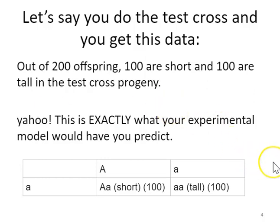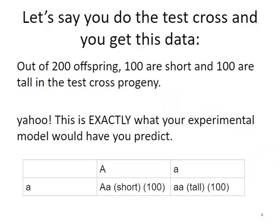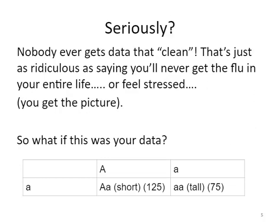Let's say you do that test cross experiment and you get 200 offspring — 100 of them are short and 100 of them are tall. That's pretty fantastic, right? You couldn't have planned that data any better. If you had 200 progeny split 100 and 100, that's actually textbook perfect data. Seriously, in life you just never get data that's that perfect, because there's always fluctuation due to chance alone, especially in complex systems like living organisms.